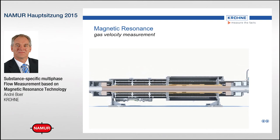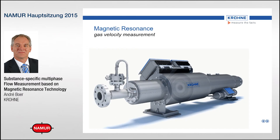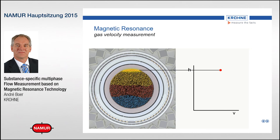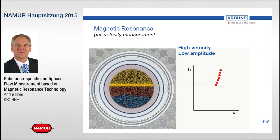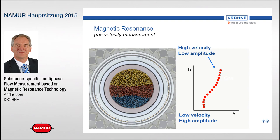The difficult part is the gas velocity measurement, because gas gives very small signals. Fortunately, as you may know from MRI in hospitals, you can also do imaging — and that's what we do here. In the cross-section, we can look for velocities per small slice. We divide the cross-section of the pipe into 16 individual slices and repeat the measurements we did before, so we can measure the velocity per slice and the amplitude per slice — giving us an enormous amount of information about what is happening inside that pipe.